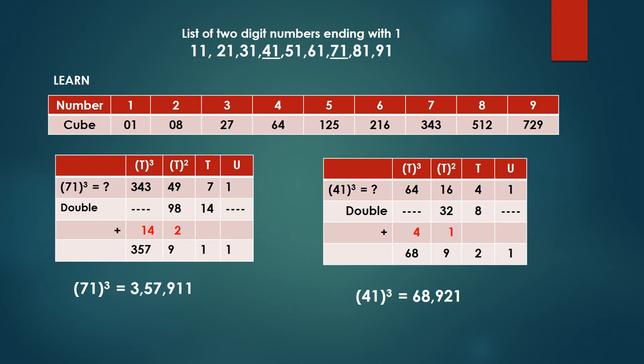Now let us take two more examples: 41 cube and 71 cube. U and T, units place and tens place. So I am writing our original number 71 here whose cube we are trying to find out.